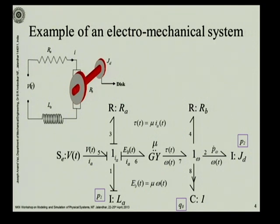For gyrator, the causality is flow to effort and for this I element, here you have the stroke here. So, for this one junction, the bonds should take causality like this.